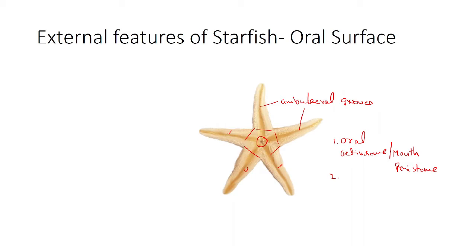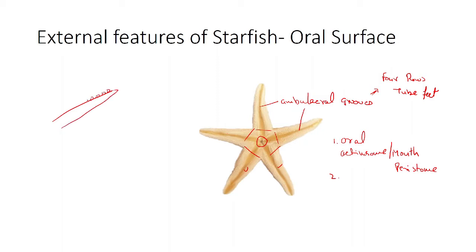Each ambulacral groove contains four rows of locomotory organs which also act as food-capturing organs and respiratory sensory organs. These are known as the tube feet. Tube feet are soft, thin, tubular, retractile structures provided with a terminal disc or sucker. The sucker functions as a cup to afford firm attachment on the surface to which they are applied. The suckers attach themselves to the substratum.